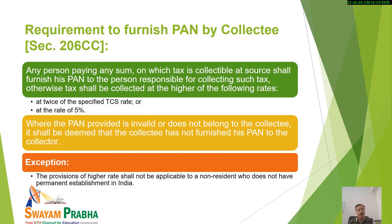Again, regarding deductibility of surcharge — if applicable — and health and education cess: if the purchaser, buyer or licensee or lessee is a non-resident, non-corporate assessor, or a non-domestic company, then surcharge if applicable and health and education cess is also required to be collected along with the rates already mentioned — 1%, 2.5% as applicable to a particular case.